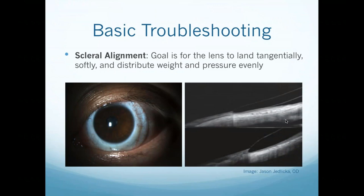We want the lens to land tangentially, softly, distributing weight and pressure evenly. An OCT image illustrates what landing tangentially means: the lens should be at a similar angle to the patient's sclera. In the bottom photo, the lens angle is too steep and is digging into the conjunctiva overlying the sclera — clinically this would show a blanching appearance behind the slit lamp. OCT can be beneficial for troubleshooting areas where the patient is complaining but you're not seeing anything clinically.